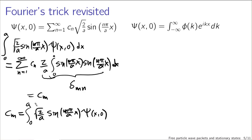What that means is that the sum collapses — the only remaining term is the term from c_m — so our right hand side just becomes c_m. This gave us our formula for c_m being equal to the integral from 0 to a of √(2/a) · sin(mπ/a · x) times our initial conditions ψ(x,0). This was a very brief overview of what we did back when we were talking about the particle in a box.